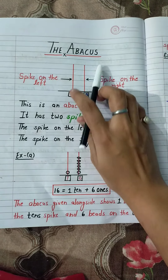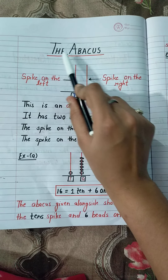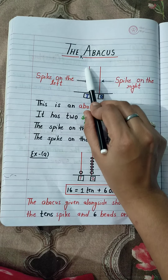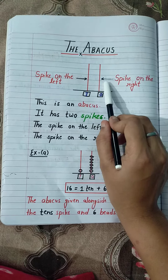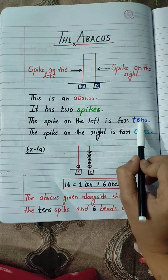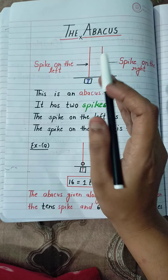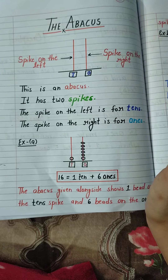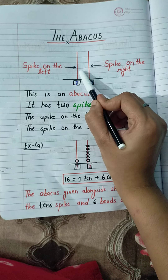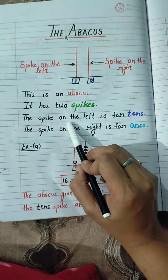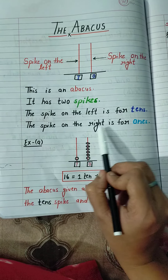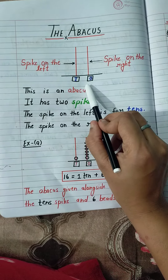Now, the next topic is the abacus. This is an abacus. It has two spikes. Your right hand is the right spike and your left hand is the left spike. The spike on the left is for tens, and the spike on the right is for ones.